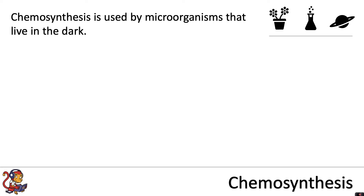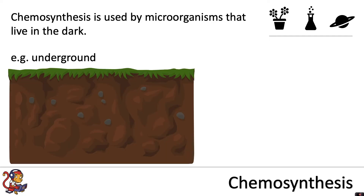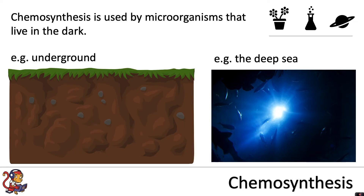Chemosynthesis is used by microorganisms that live in the dark, for example underground or in the deep sea. These microorganisms don't have access to sunlight, so they couldn't evolve to use photosynthesis like plants and algae did. Instead, they use the chemicals around them — in the soil or in the water — to produce their own food.